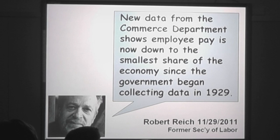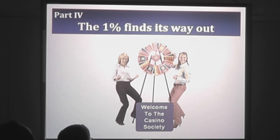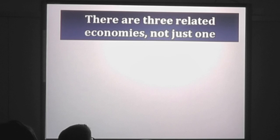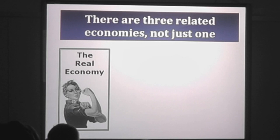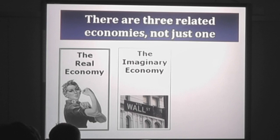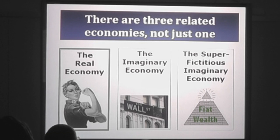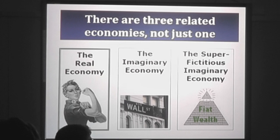New data from the Commerce Department shows employee pay now down to the smallest share of the economy since the government began collecting the information. The 1% found their way out of the bind at the expense of the rest of us — we call it the casino economy. There are three related economies in America: the real economy where people work and make things; the imaginary economy where people gamble on the future value of pieces of paper; and the super fictitious imaginary economy, which includes Bernie Madoff, who pretended to make investments and didn't, Enron that pretended to make profits and didn't, and a whole part of the financial sector that basically prints money.